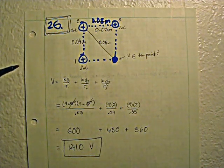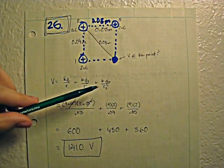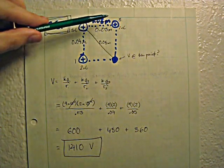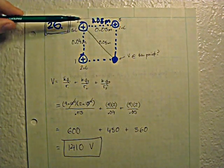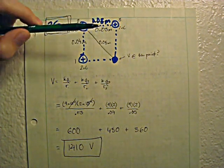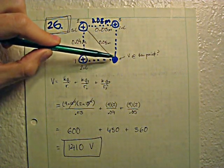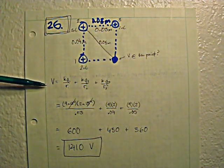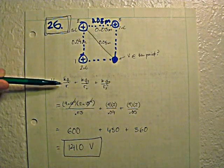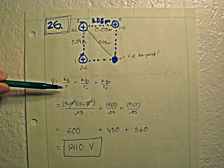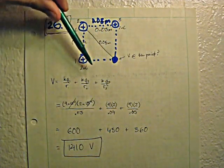So you just set up your equation so that it adds all three of the voltages that the charges have on this point. So it's V equals KQ1 over R1 plus KQ2 over R2 plus KQ3 over R3.